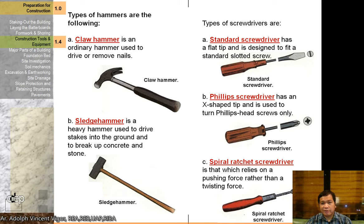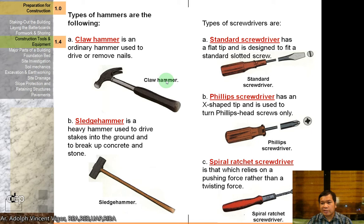There are different types of hammers. The claw hammer is an ordinary hammer used to drive or remove nails — one end for driving, the other curved end for removing. A sledge hammer is a heavy hammer used to drive stakes into the ground and to break up concrete and stone. For screwdrivers: the flat-tip screwdriver fits a standard slotted screw, the Phillips screwdriver has an X-shaped tip for Phillips head screws only, and the spiral ratchet screwdriver relies on a pushing force rather than a twisting force.